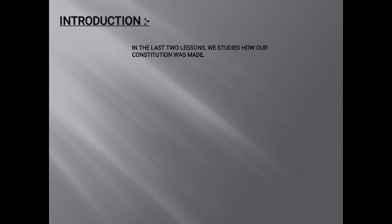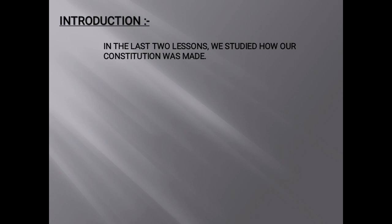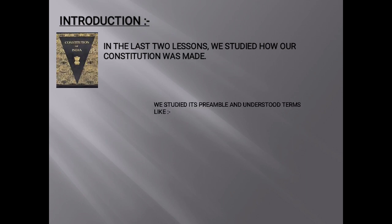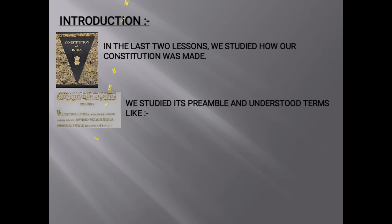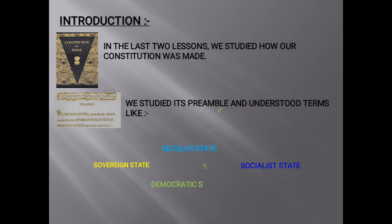Introduction. In the last two lessons, we studied how our constitution was made. We studied its preamble and understood terms like Sovereign state, Socialist state, Secular state, Democratic state, and Republic state. The goals expressed in the preamble are the characteristic features of our constitution as well. Apart from these, the constitution also has other features. Let's learn the first in detail.